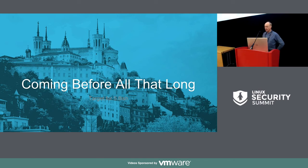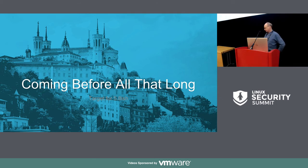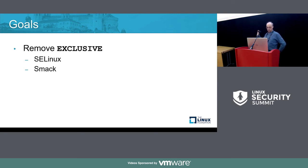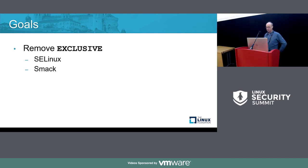One of the issues is that when you allocate one of these text strings, you then have to free it at some point. In order to do that, you need to know which LSM allocated it because they have different policies for how you should go about freeing it. There's a little bit of complication there, but it actually makes some of the internal interfaces a little bit cleaner — so I consider that a win. That's what we need to do to take the exclusive tag off of AppArmor.